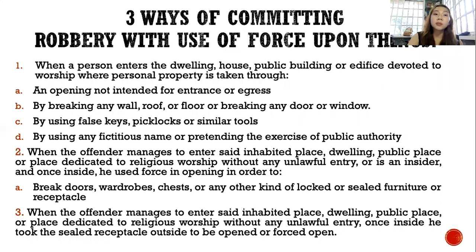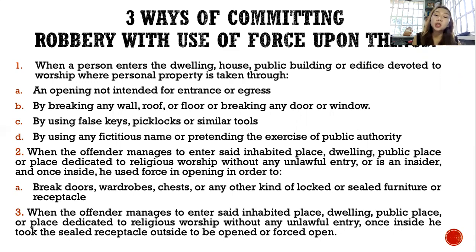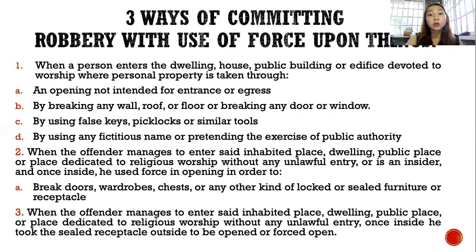What are the three ways of committing robbery with the use of force upon things? One is when a person enters the dwelling, house, public building, or edifice devoted to worship where personal property is taken through an opening not intended for entrance or egress — such as windows — by breaking any wall, roof, or floor, or breaking any door or window, by using false keys, pick locks, or similar tools, or by using any fictitious name or pretending the exercise of public authority.